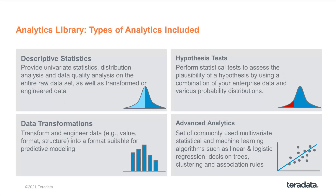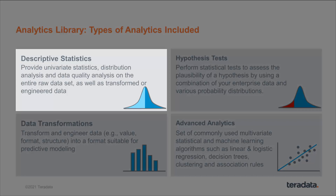So what type of capabilities do you get with the Vantage Analytics Library? It can be broken down into four different types. First, you get descriptive statistics — understanding univariate statistical properties of your data, your distribution analysis, and data quality or data profiling on your entire data set, as well as the data that you transform or engineer and get ready for analytic modeling.